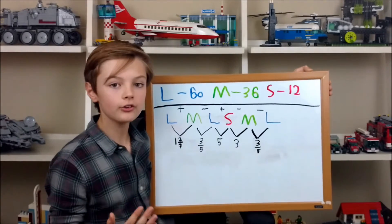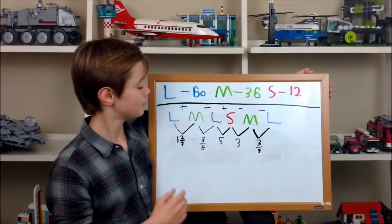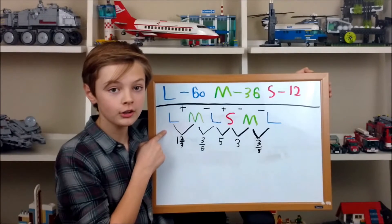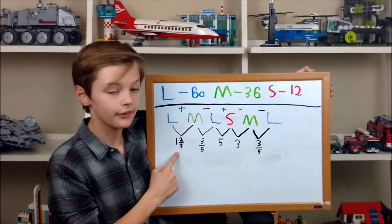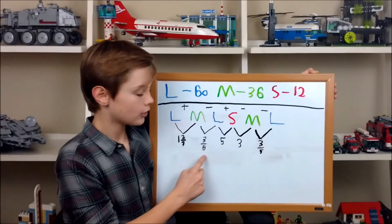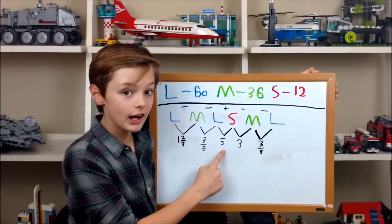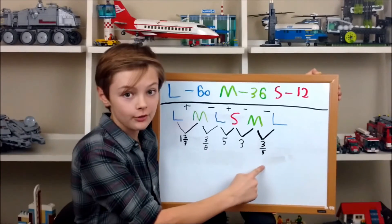Next, you do the division. The large gear powers the medium gear gives you 1 and 2/3, then 3/5, then 5, then 3, then 3/5.